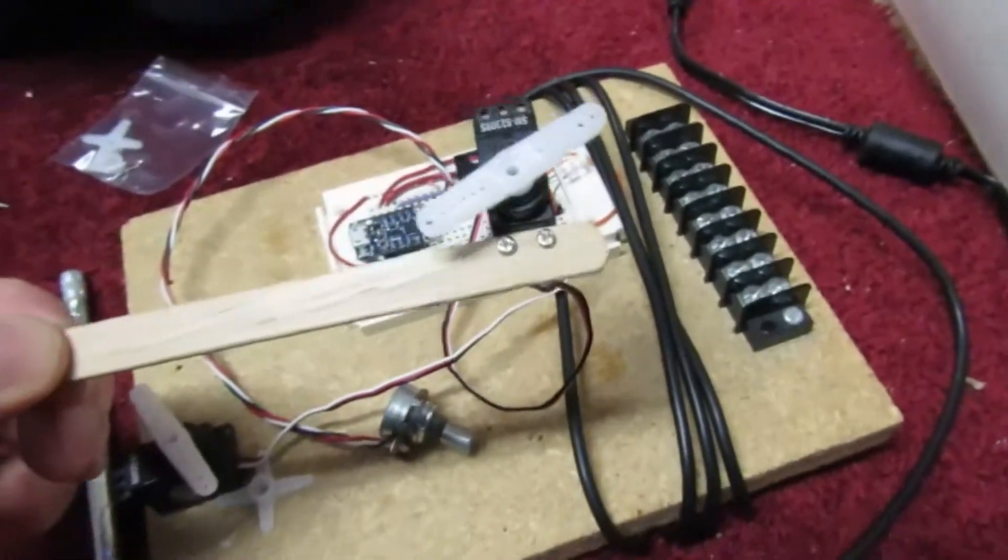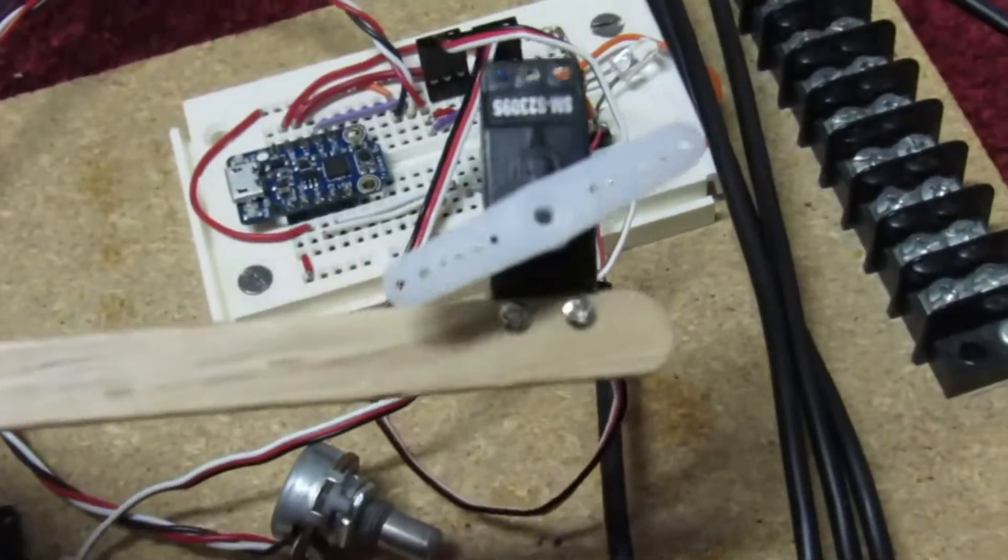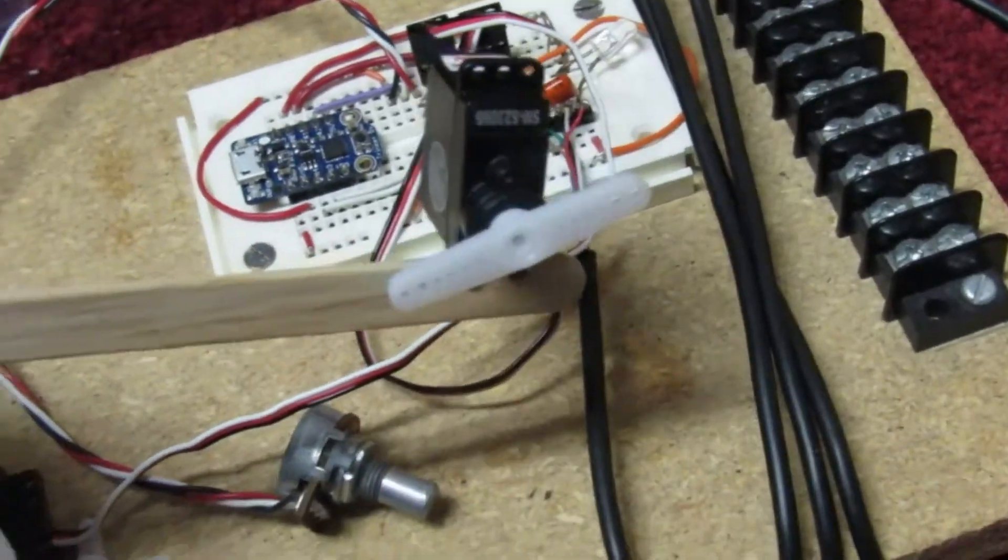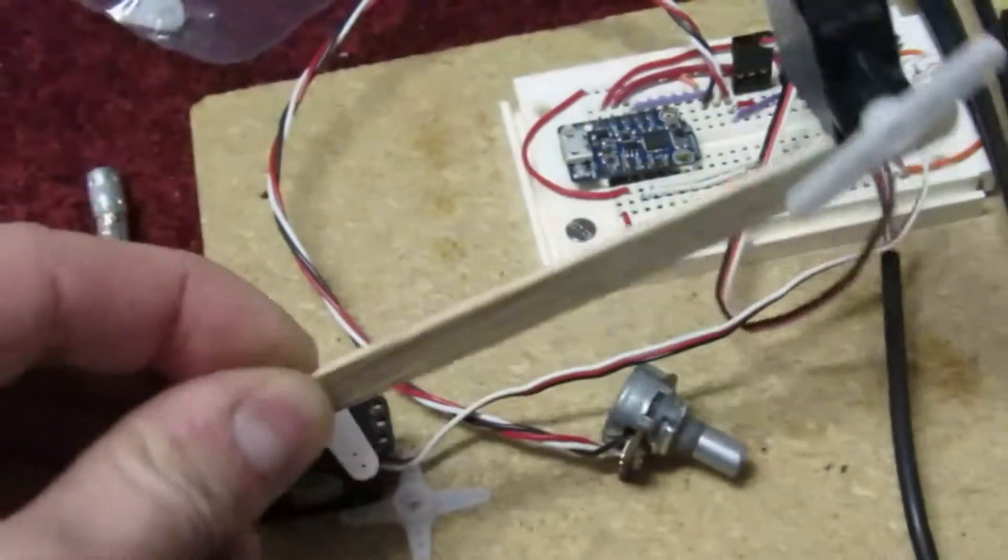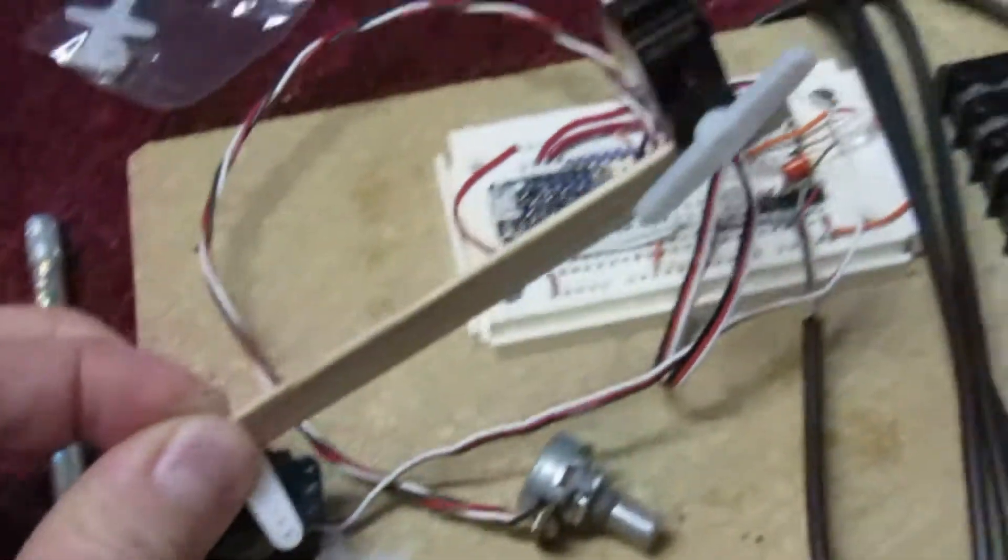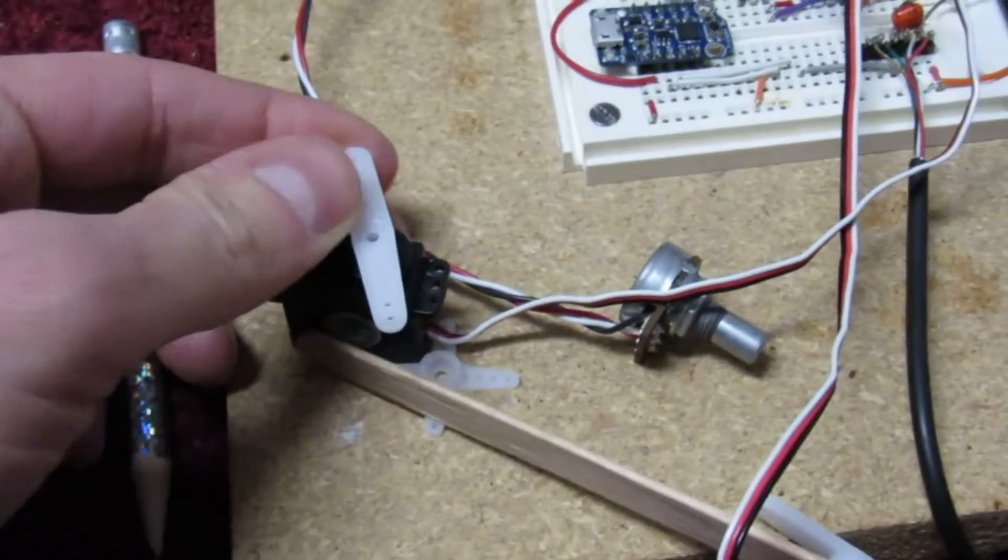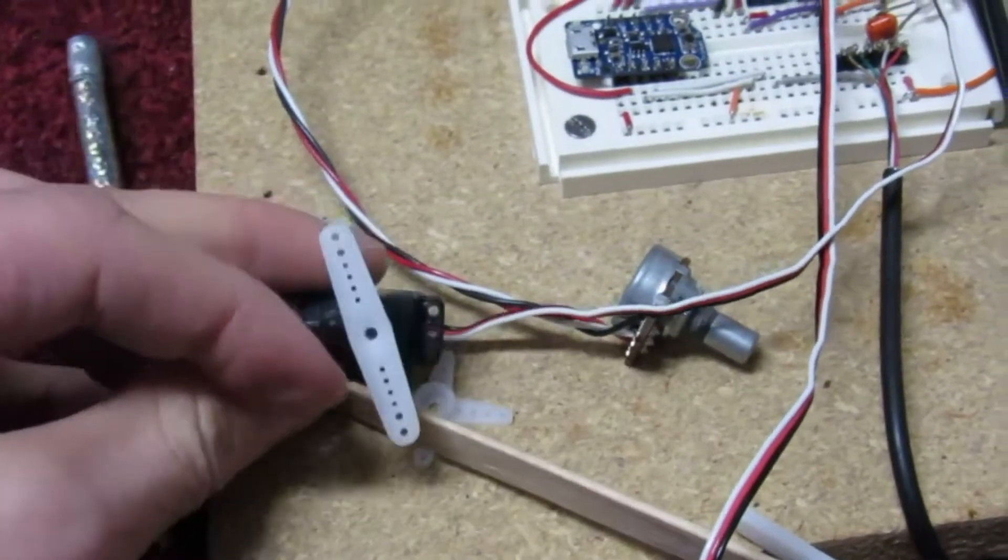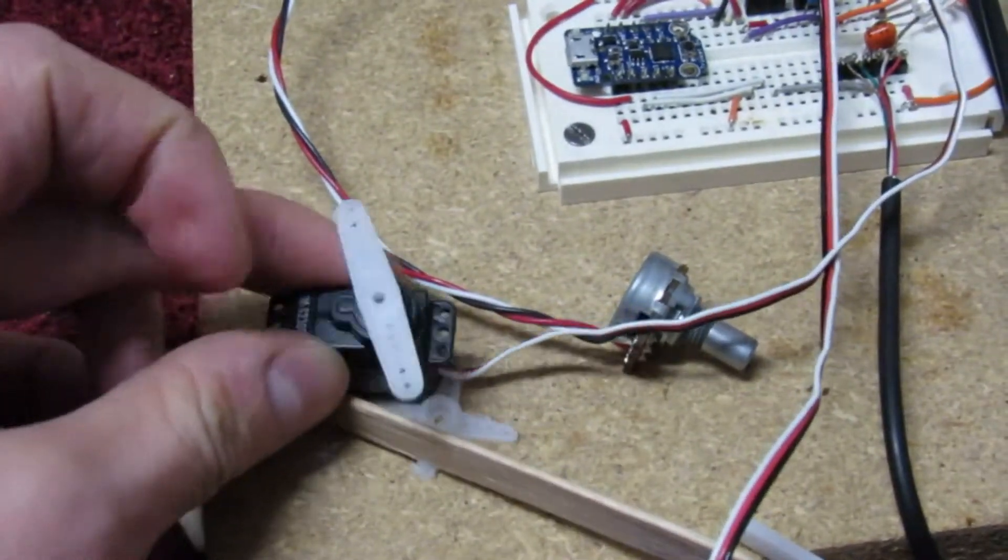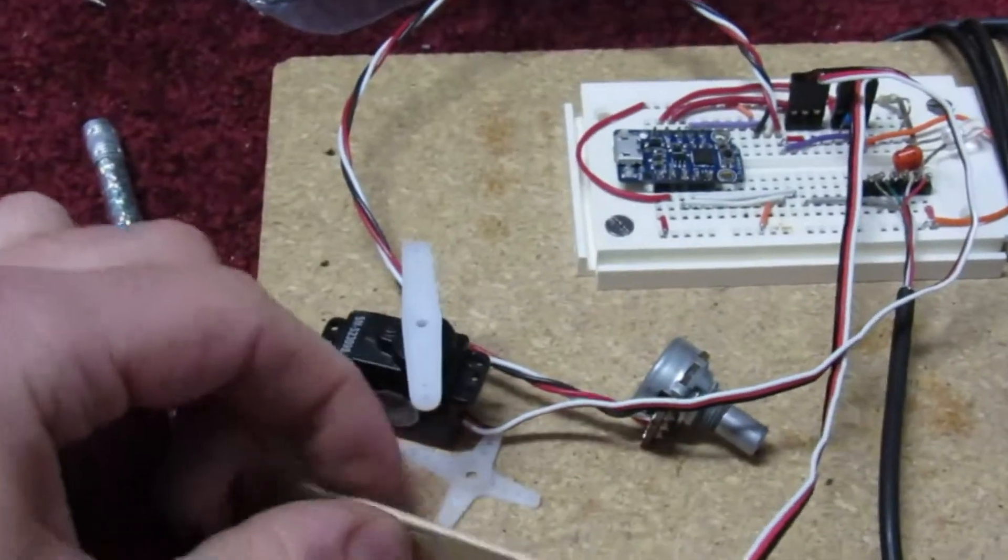So these are the screws mounting the first servo motor, and that's going to hold the pencil. And now we need to make the second servo motor hold the stick upright, and to do that we're going to bend these arms up using a heat gun, and then put a little pin through the hole to hold the wood stick.